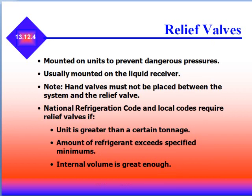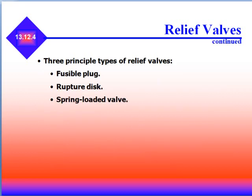Relief valves are mounted on vessels to prevent dangerous pressures. They are required by law in most states, especially in Connecticut and Massachusetts, and are usually mounted on the liquid receiver. Hand valves cannot be placed between the system and the relief valve. The National Refrigeration Code and other local codes require relief valves if the unit is greater than a certain tonnage, the amount of refrigerant exceeds specified minimums, or the internal volume is great enough. There are three types of relief valves: a fusible plug, a rupture disc, and a spring-loaded valve.